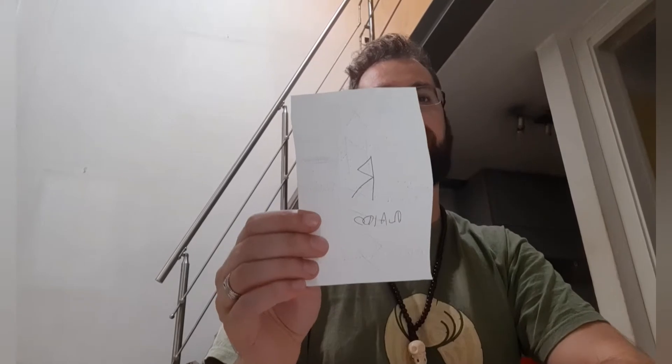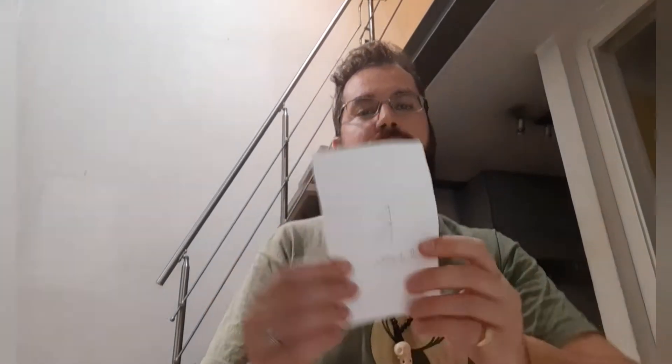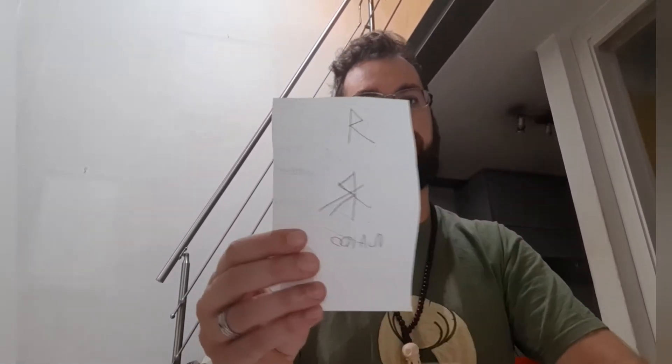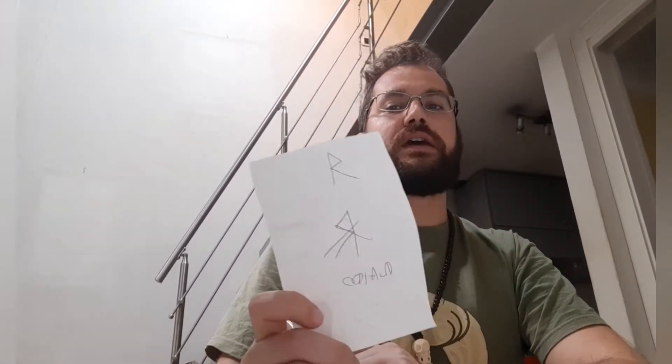Il mese è legato alla runa Raido, che è la runa a forma di R. È una runa di movimento e rappresenta il carro del sole. È una runa legata al carro, al cambiamento, all'aria che si rinfresca. Ma è anche una runa di grande dispersione: aiuta al movimento, però allo stesso tempo disperde le energie.